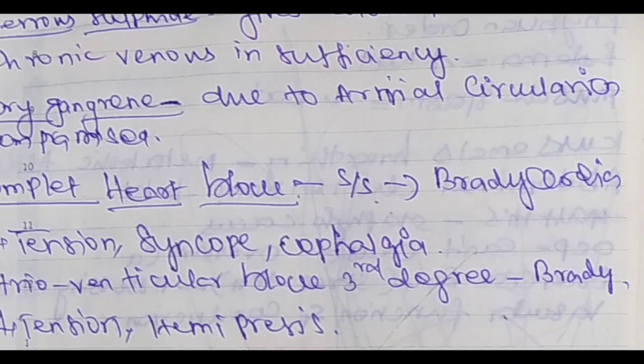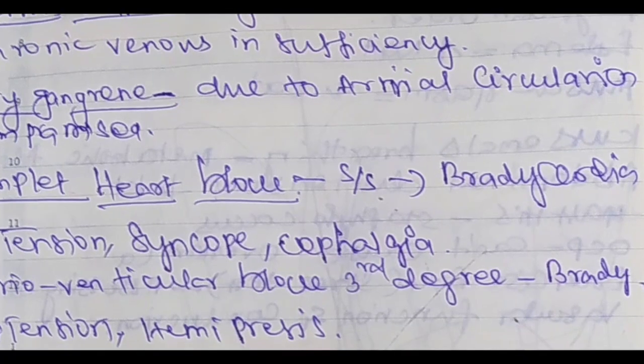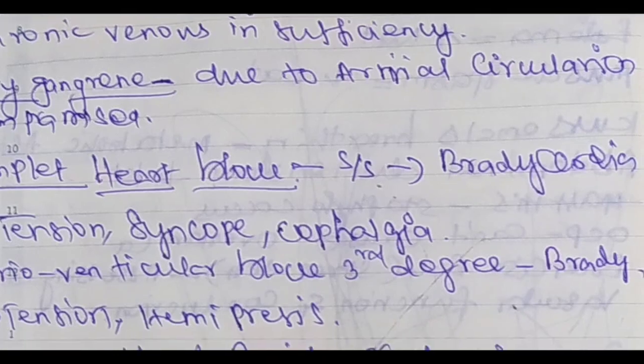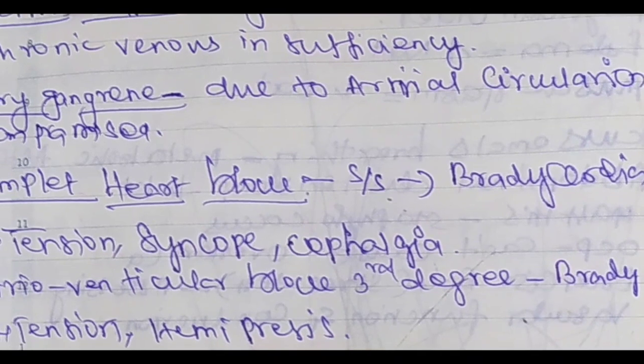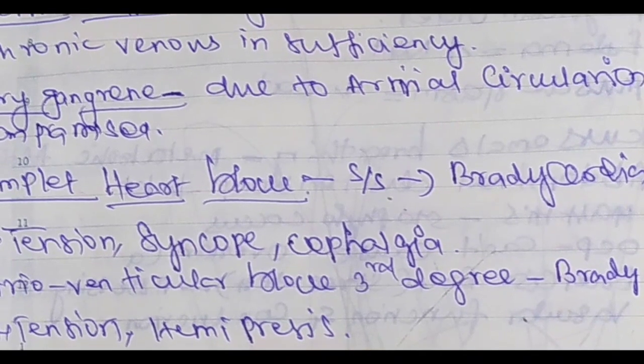Dry gangrene is due to arterial circulation being compromised — not venous circulation. Arterial circulation compromised leads to dry gangrene. So that's why: dry gangrene equals arterial circulation compromised.